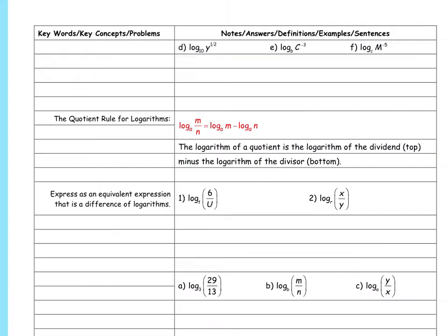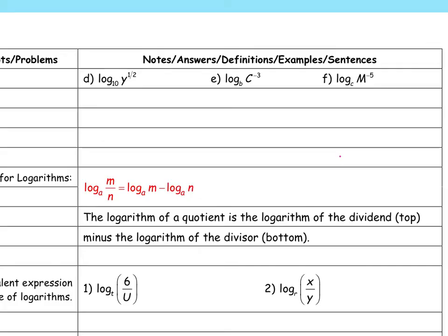Three more problems: the exponent goes in front giving one-half log base 10 of y; negative three log base b of c; and negative five log base c of m. Is everyone okay? Please make sure you're putting answers in the chat box.